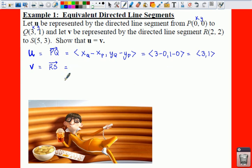Now we have to show that U is equal to V. So V should end up being 3, 1 also. In this case, we're going to take the X of our S minus the X of R—terminal minus initial—Y of S minus Y of R. We plug these values in: 5 minus 2, comma, 3 minus 2, equals 3, 1.